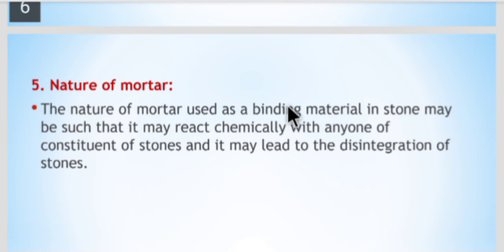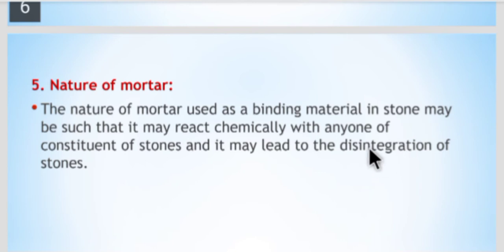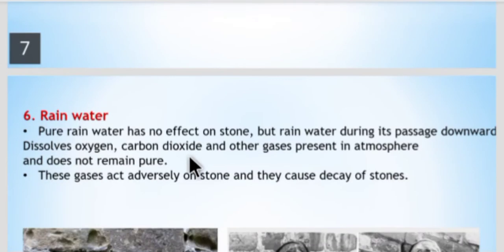The fifth reason is the nature of mortar. Mortar is a mixture of water, cement, and sand, used as a binding material in stone masonry. This mortar may react chemically with the stone constituents, causing the stone to disintegrate. Disintegrate, deterioration, and decay are the same. Due to chemical action between mortar and stone, the stone may get disintegrated.